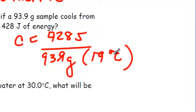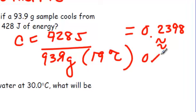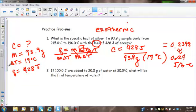So, notice how I have joules, grams, and Celsius. Well, that makes sense, because the units for C are joules per gram, dot Celsius. So, 428 divided by 93.9 times 19 is going to give me an answer of 0.2398. So, that's approximately 0.24 joules per gram, dot Celsius. Let's do another one.